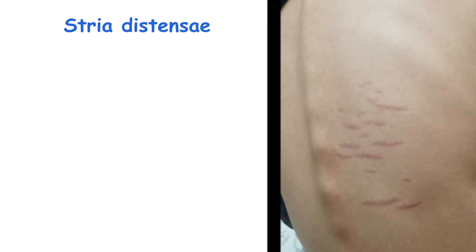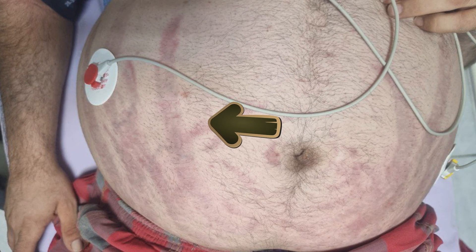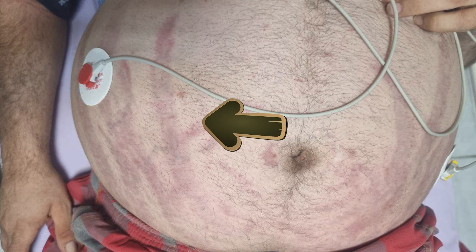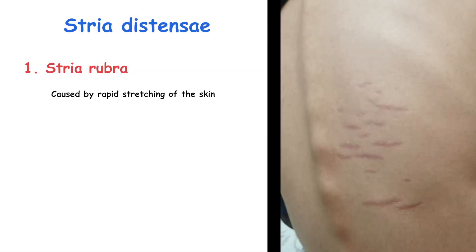Stretch mark, or stria distensae, is a common form of skin scarring that appears as red, purple, or hypopigmented linear striations. There are two main types of stria distensae. The first is stria rubra, which is the early stage of stretch marks and usually appears reddish or purplish in color. They are caused by rapid stretching of the skin in the dermis layer, or the middle layer of the skin.